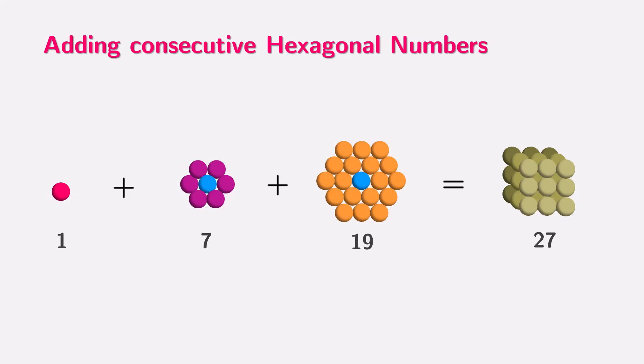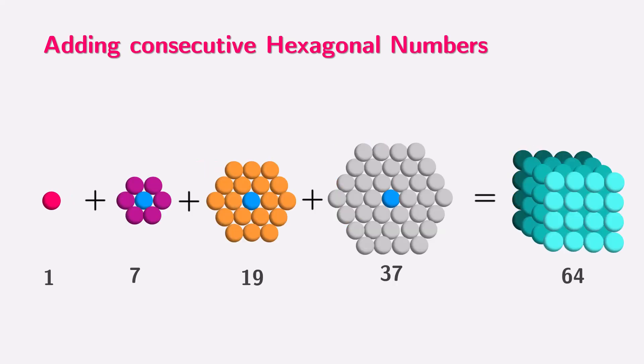If we keep going, adding 19 to 8 gives us 27, which is 3 times 3 times 3, or 3 cubed. Adding the next hexagonal number, 37, to 27 gives us 64, which is 4 times 4 times 4, or 4 cubed.